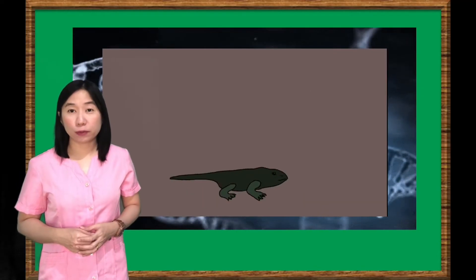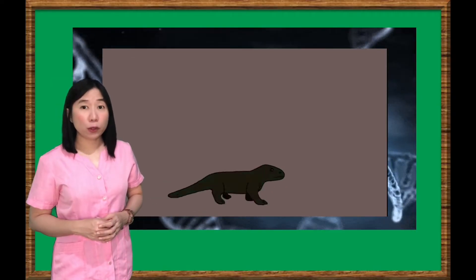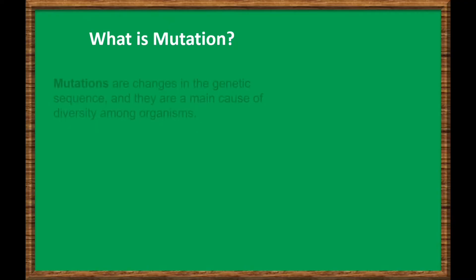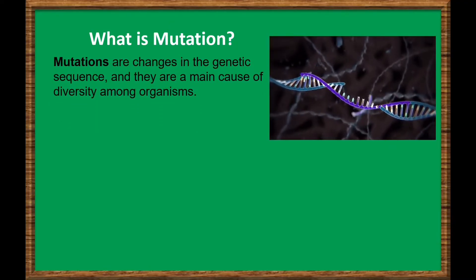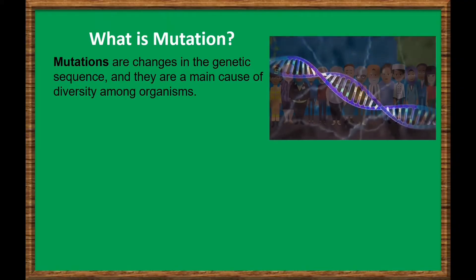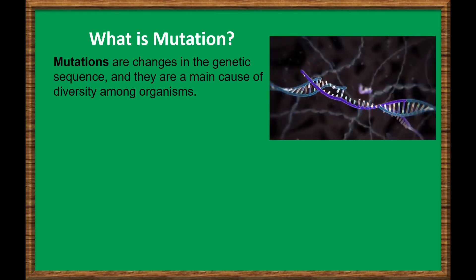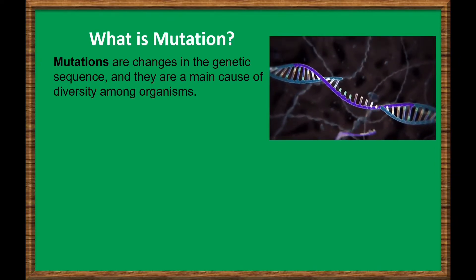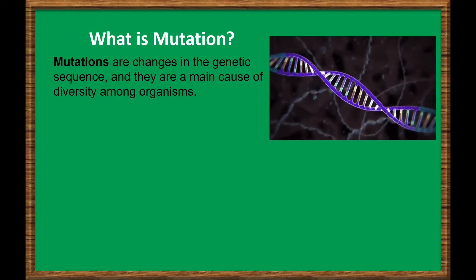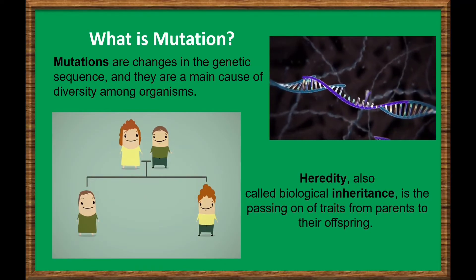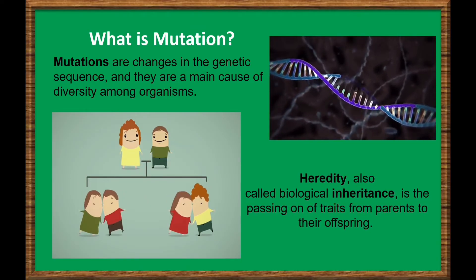Is it possible to have too many mutations? What about too few? While mutations are necessary for evolution, they can damage existing adaptations as well. Mutations are changes in the genetic sequence and they are a main cause of diversity among organisms. These changes occur at many different levels and they can have widely differing consequences. In biological systems capable of reproduction, we must first focus on whether they are heritable. Heredity, also called biological inheritance, is the passing on of traits from parents to their offspring.